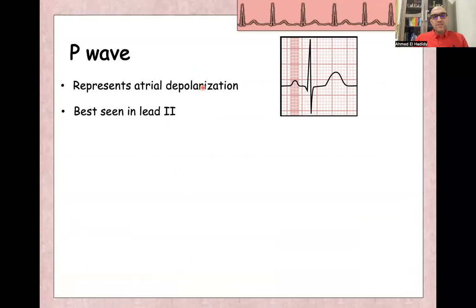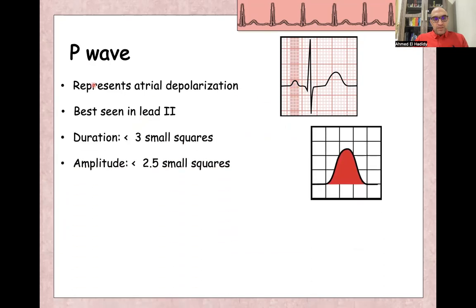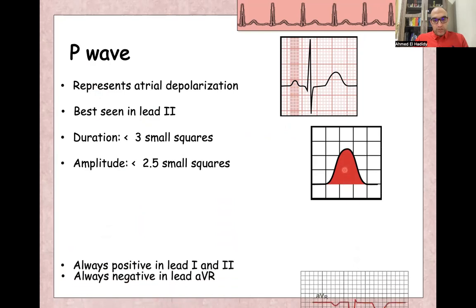Starting with the P wave. P wave represents atrial depolarization. It is at the beginning of the impulse and best seen in lead two, where the lead axis is almost the same as the atrial depolarization axis. Normal duration for P wave is less than three small squares. Normal amplitude is about two and a half or less than two and a half small squares.